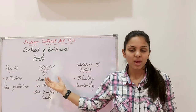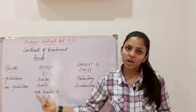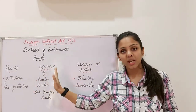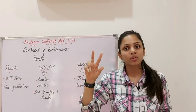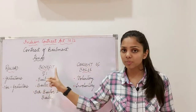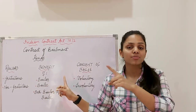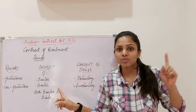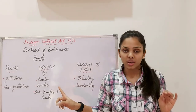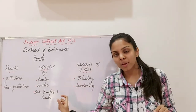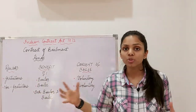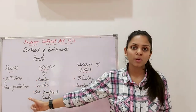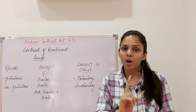Moving on to kinds of bailment on the basis of benefit — benefit can accrue to the bailor, to the bailee, or to both. Where individual benefit occurs, it is a gratuitous bailment: the bailor benefits when his pet animals are kept in safe custody by a neighbour gratuitously, and the bailee benefits when he gets a car free of cost for a marriage ceremony instead of paying heavy market rent. Where mutual benefit occurs, it is a non-gratuitous bailment.